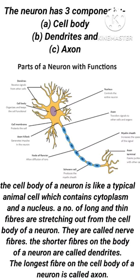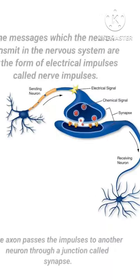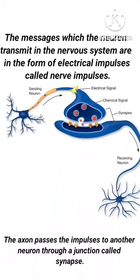A number of long and thin fibers stretch out from the cell body of a neuron. They are called nerve fibers. The shorter fibers on the body of a neuron are called dendrites. The longest fiber on the cell body of a neuron is called axon.